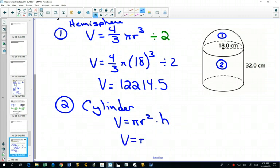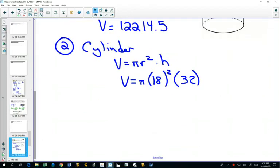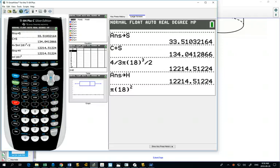Do we know everything on this one? Do we know the radius? Yes, 18. Do we know the height? Yes, 32. Can we type that in all at once? We can. Pi, 18 squared, times by the height which is 32.